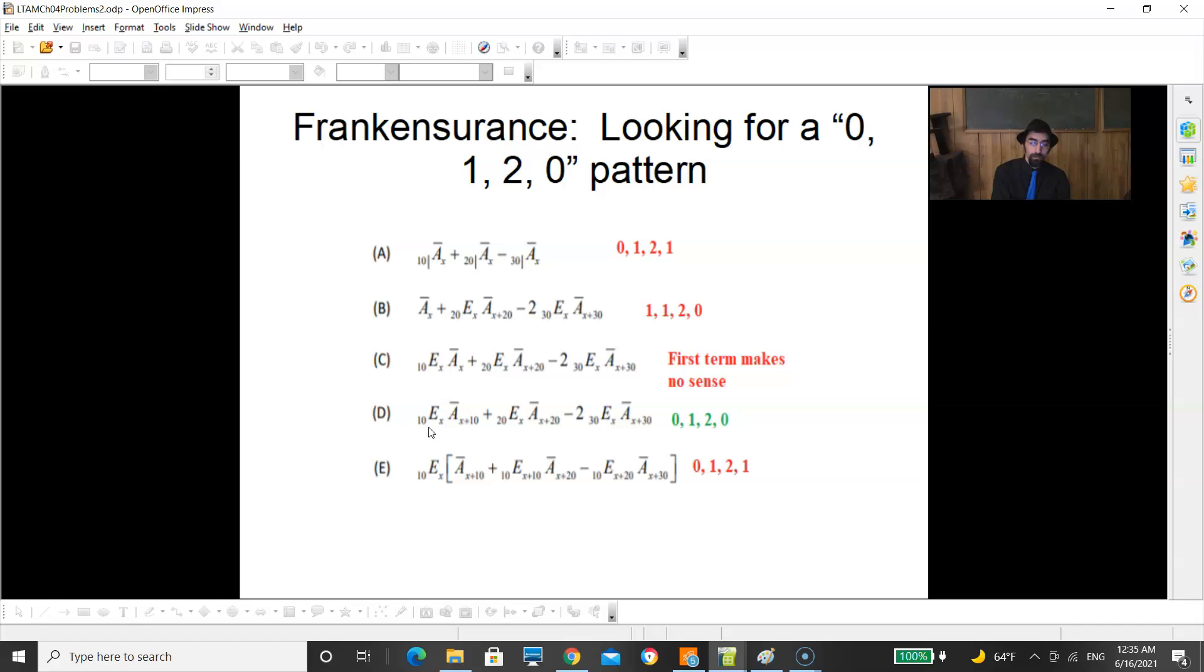Next one's actually the correct one. It kicks in 10 years in. So 0, then 1. Then add something, 2. Then subtracts 2 of them. Back to 0. 0, 1, 2, 0. What we're looking for. And this one is a 10-year delayed version of a 1, 2, 1. So it'll get you a 0, 1, 2, 1. The 10-year delayed. 0, 1, 2, 1 is not the 0, 1, 2, 0 that we're looking for. You have to look at each of these and figure out which pattern it is that you're looking for. 0, 1, 2, 0. That's this one.